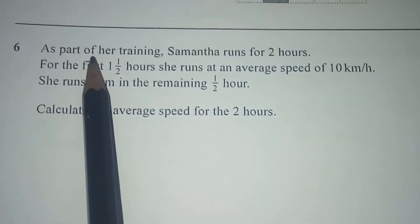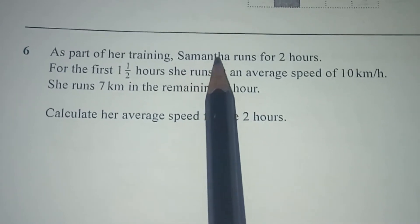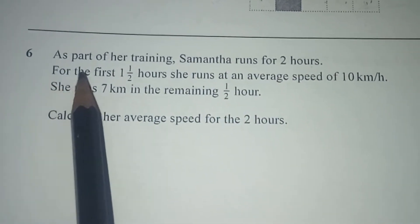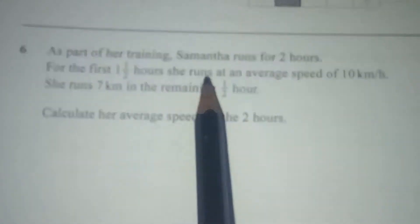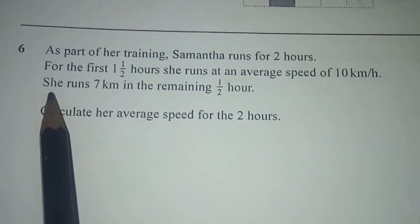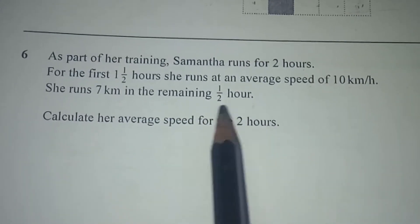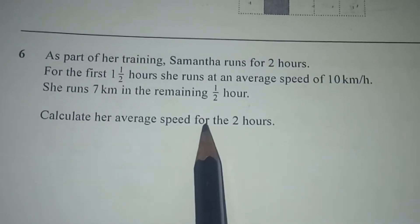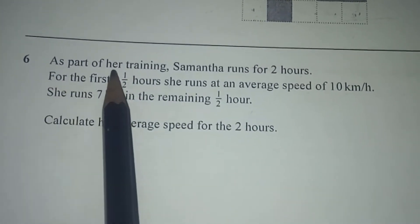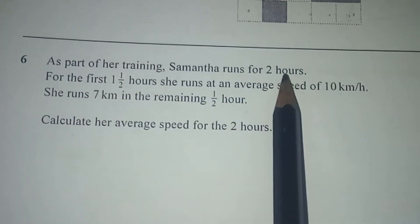Question 6: As part of her training, Samantha runs for two hours. For the first one and a half hours, she runs at an average speed of 10 km per hour. She runs seven kilometers in the remaining half hour. Calculate her average speed for the two hours. The total training is for two hours.